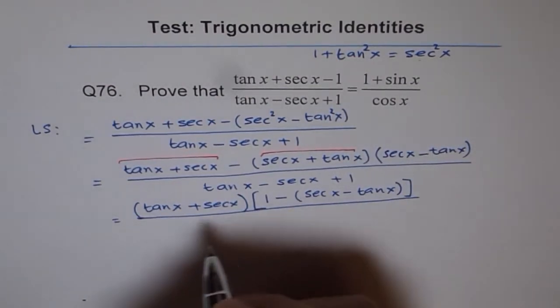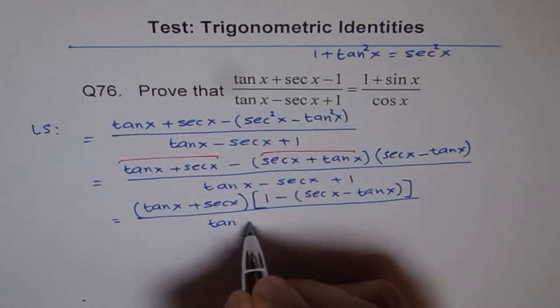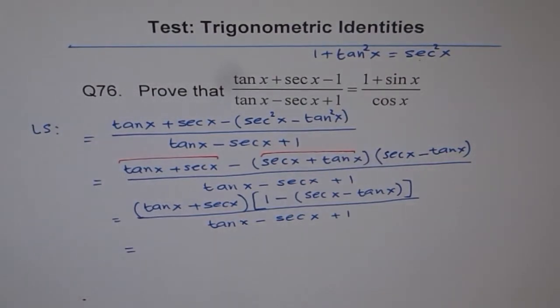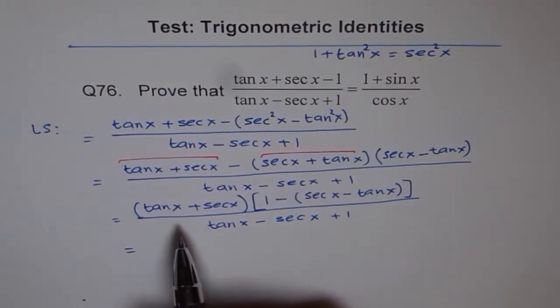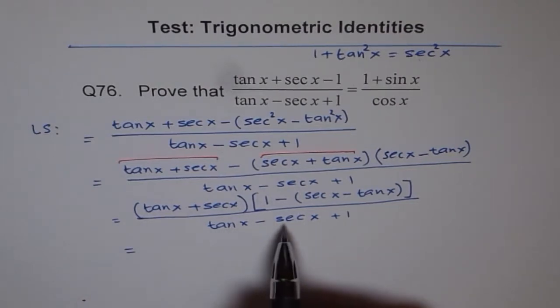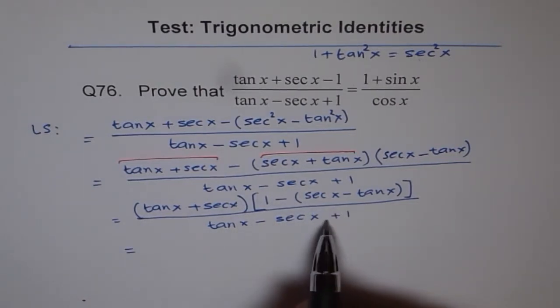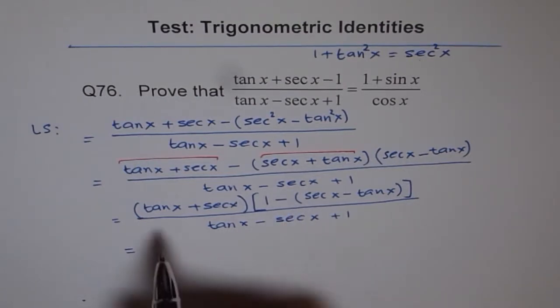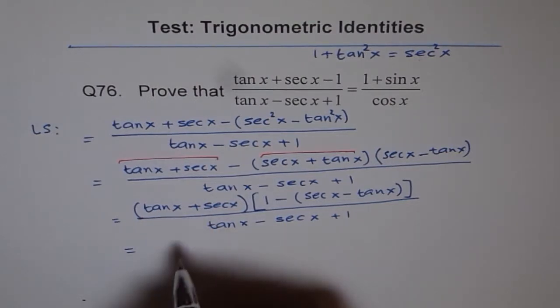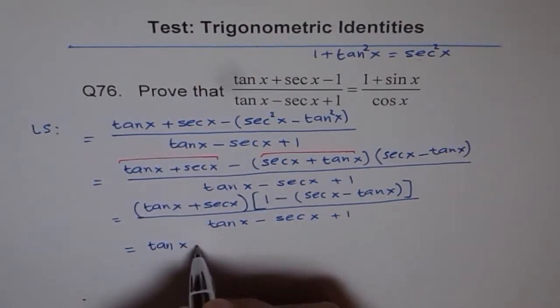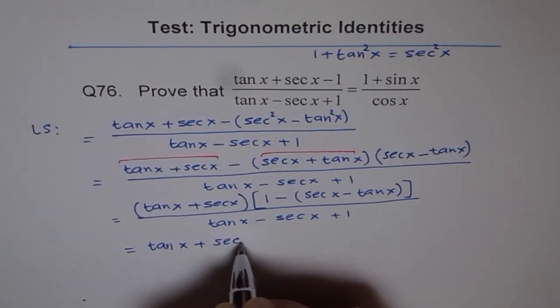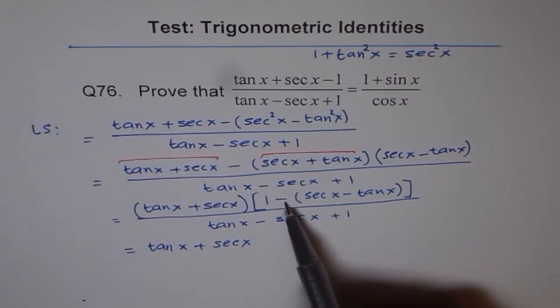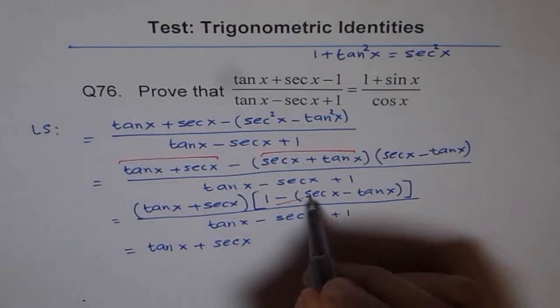If you open the bracket, we get tan x - sec x + 1. This is the same as the denominator. Here we have tan x + sec x—this is 1, this is minus sec x, and that is plus tan x. So this term in the bracket cancels out. We're left with tan x + sec x.